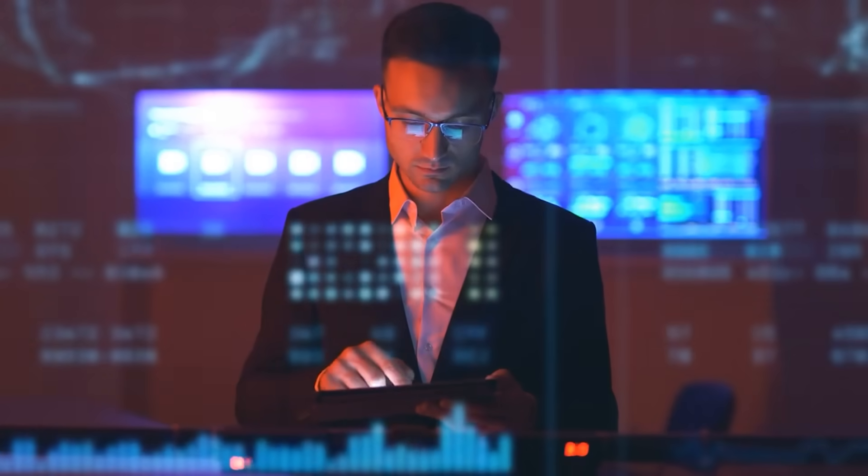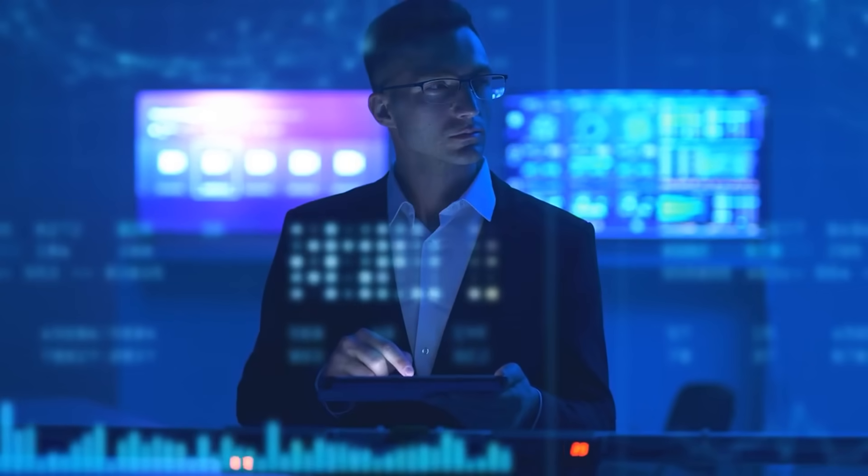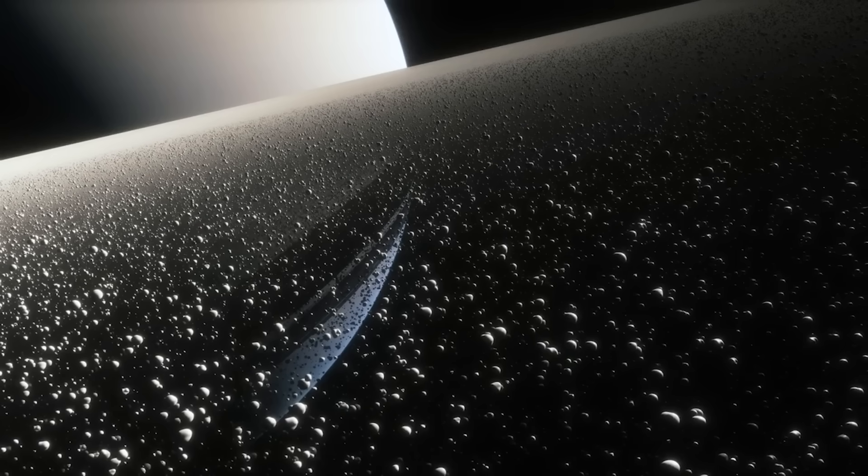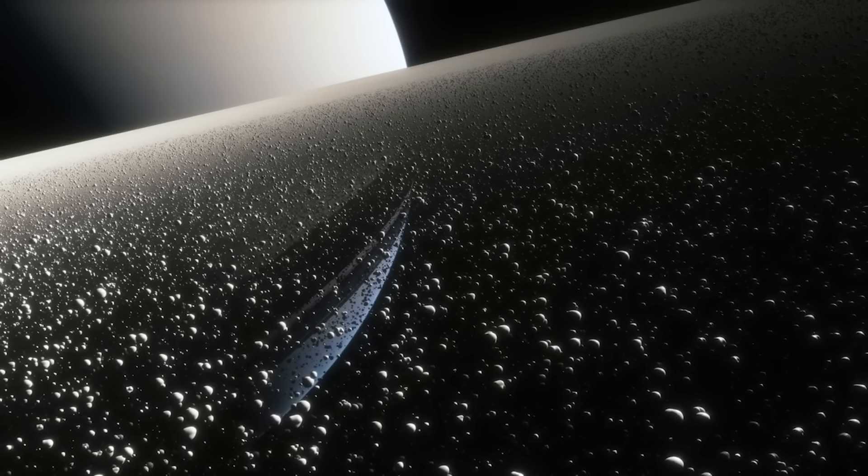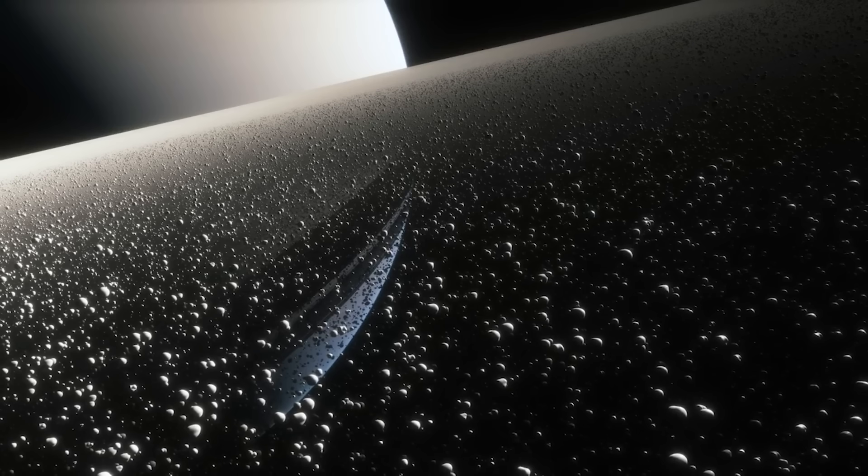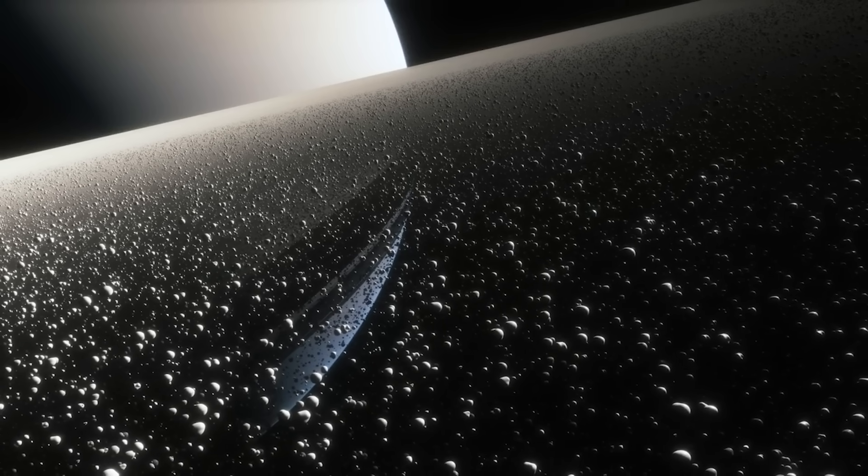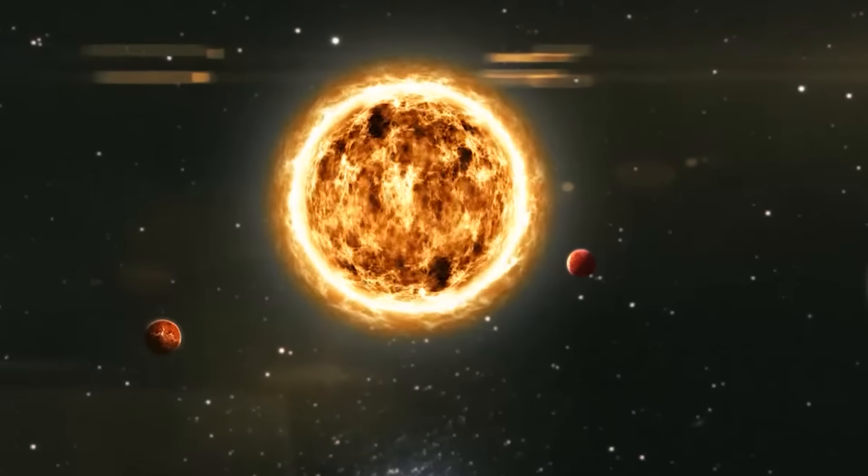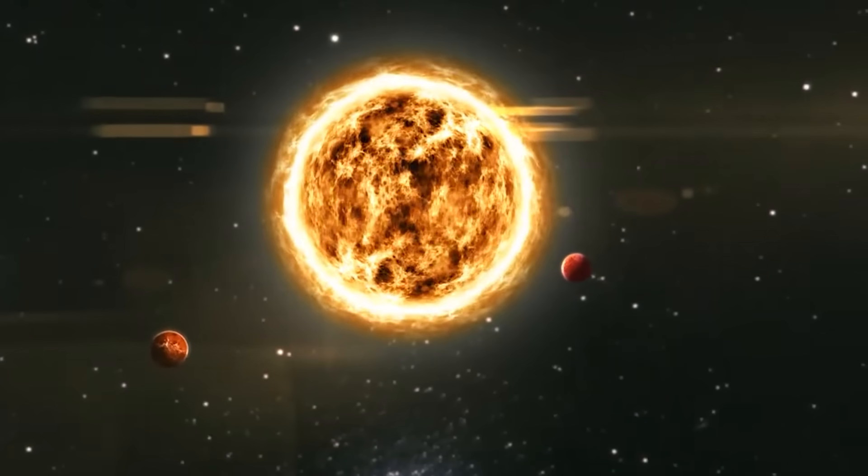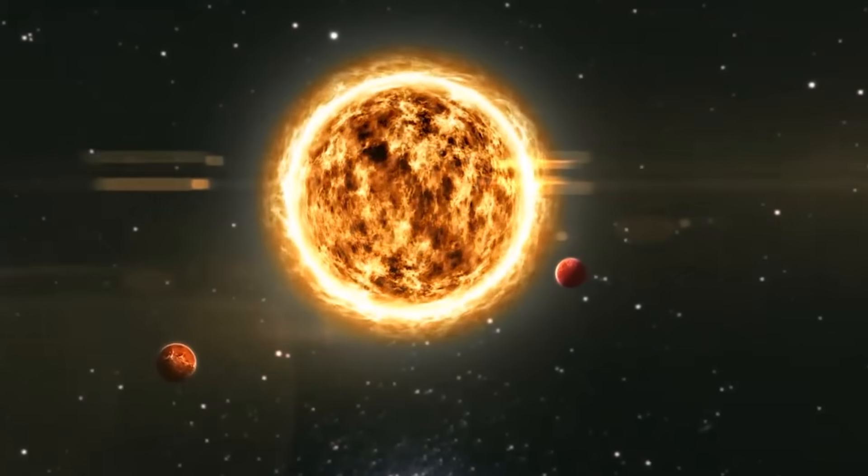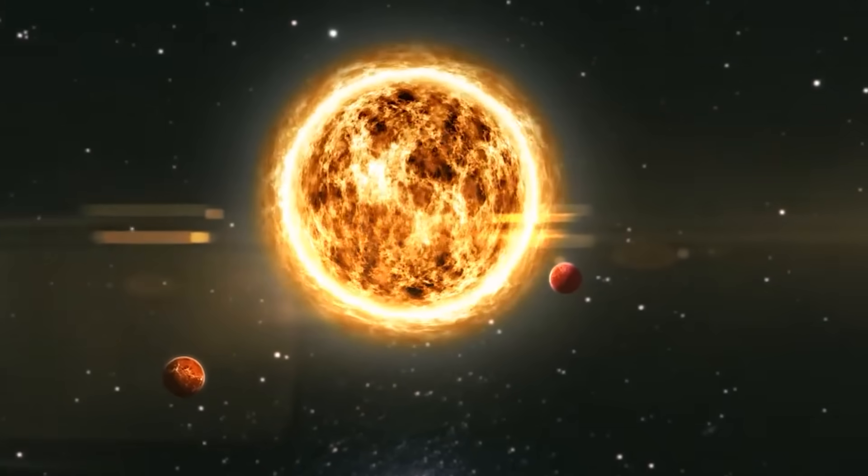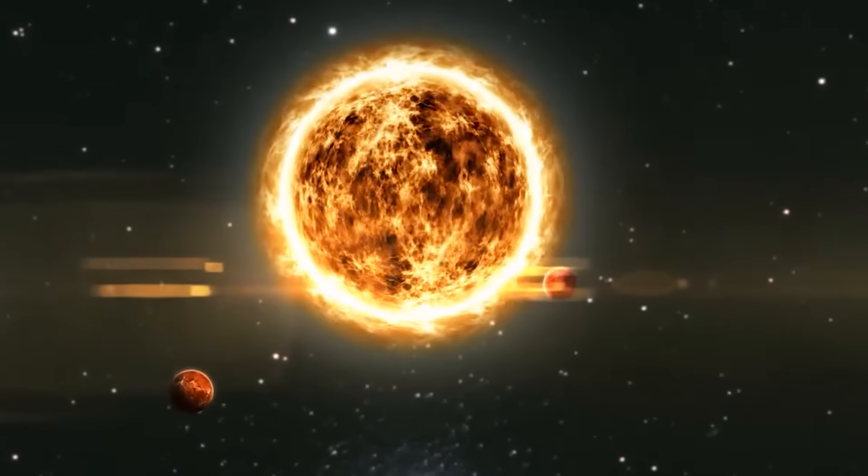The possibility that Oumuamua is an artificial probe, or worse, something far more sophisticated than our rudimentary instruments can detect, has reshaped how analysts are modeling its behavior. The shift in trajectory was first dismissed as computational error. But layer after layer of redundancy has confirmed the data. Even accounting for non-gravitational forces like solar radiation pressure or Yarkovsky effects fails to account for its speed and path.